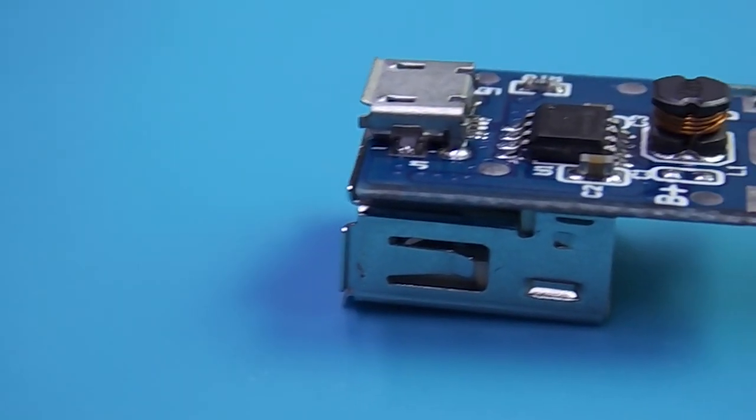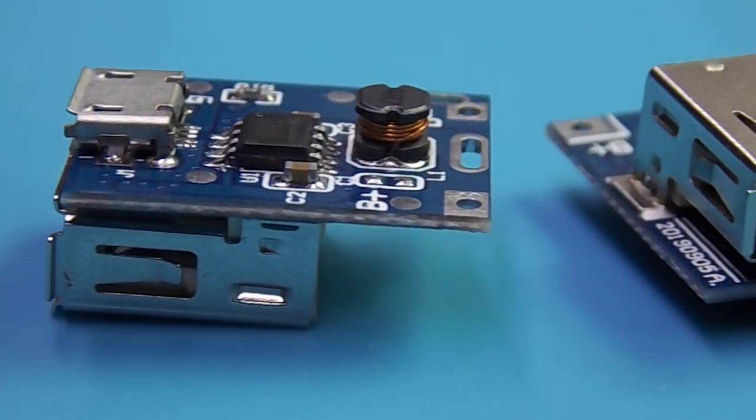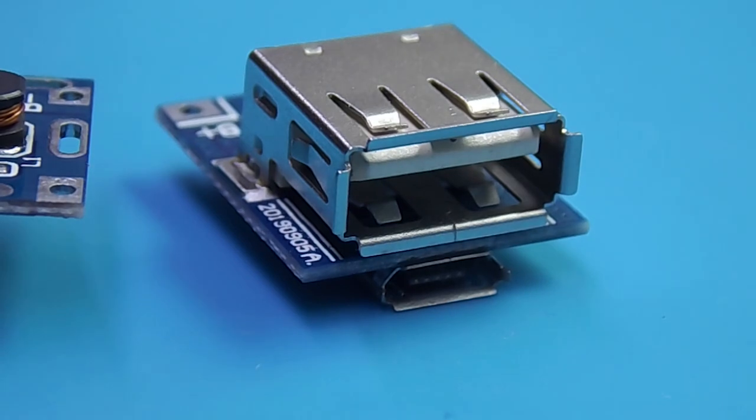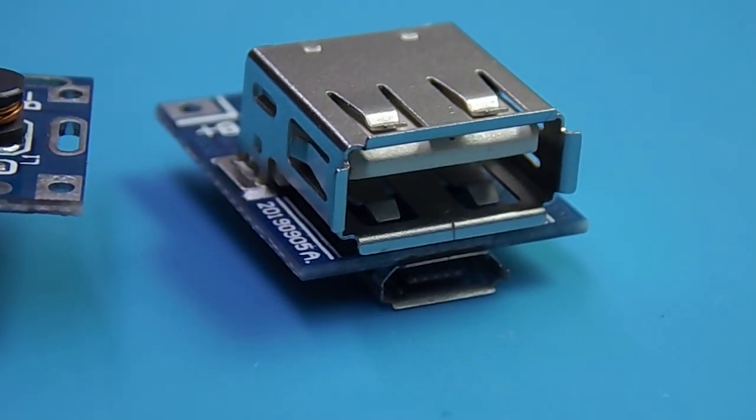There are two connectors on the converter board. USB is used to charge phones and all kinds of gadgets. And via micro USB, the power bank itself is charged.